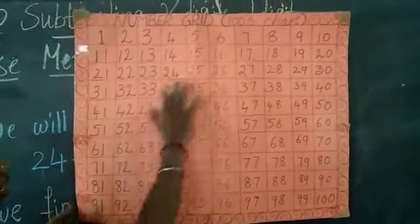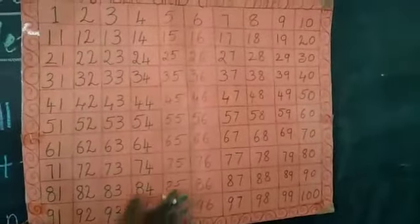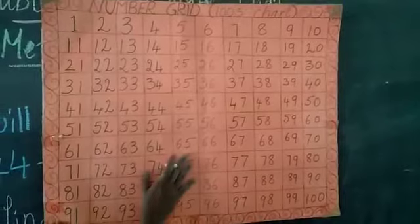This is the 100 chart. In AP1 also I have shown you 100 chart. Now in AP2 also I am showing you this is the 100 chart.